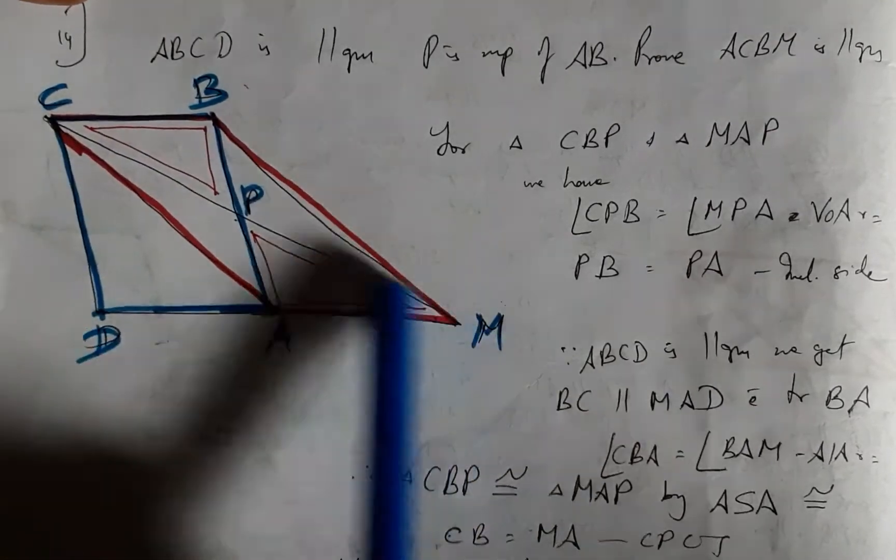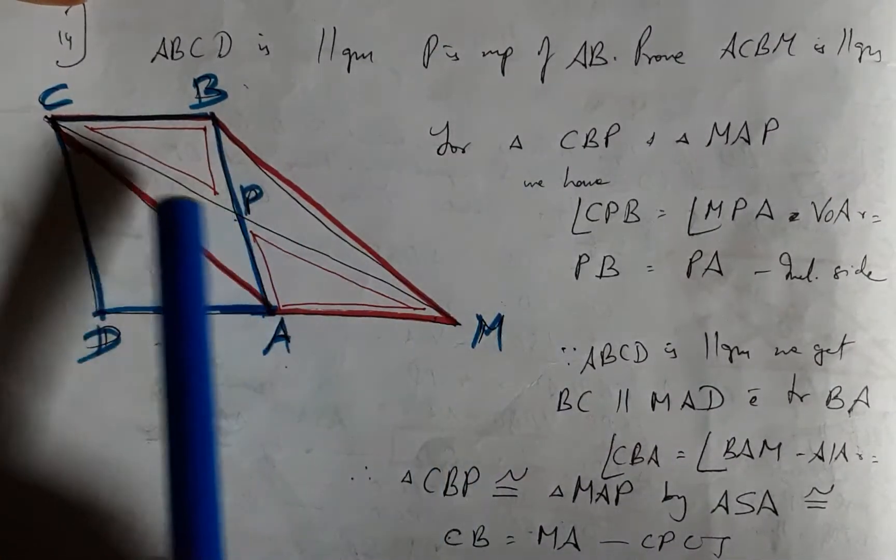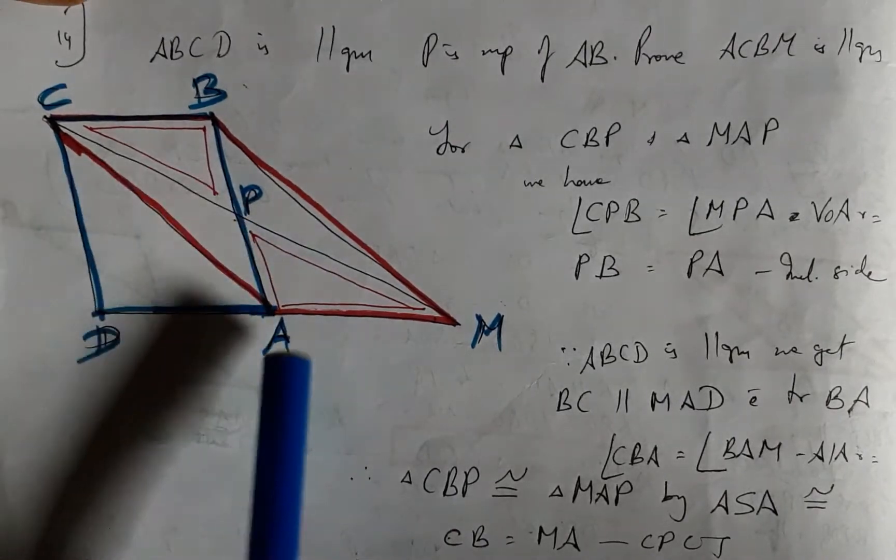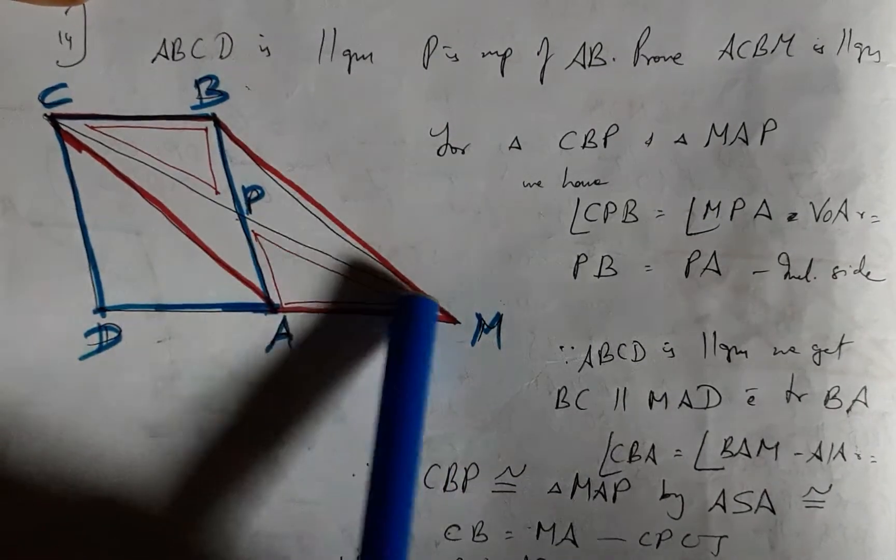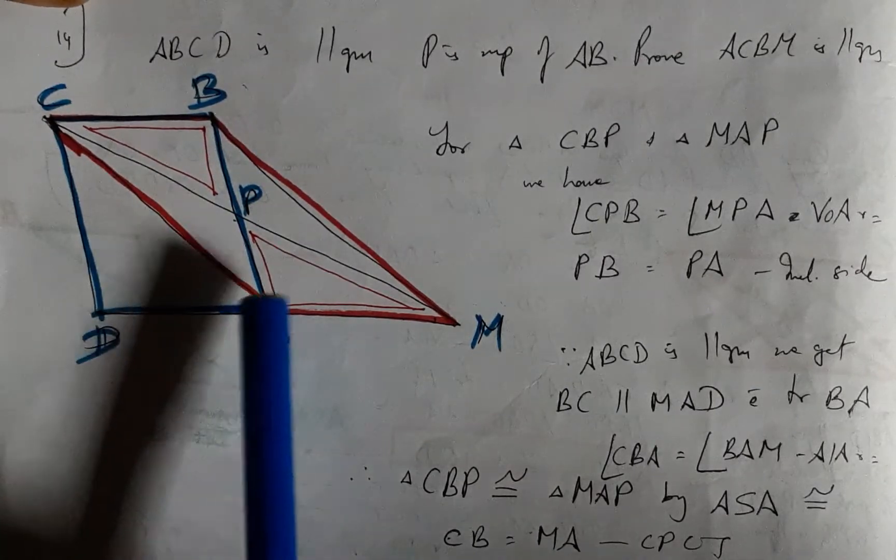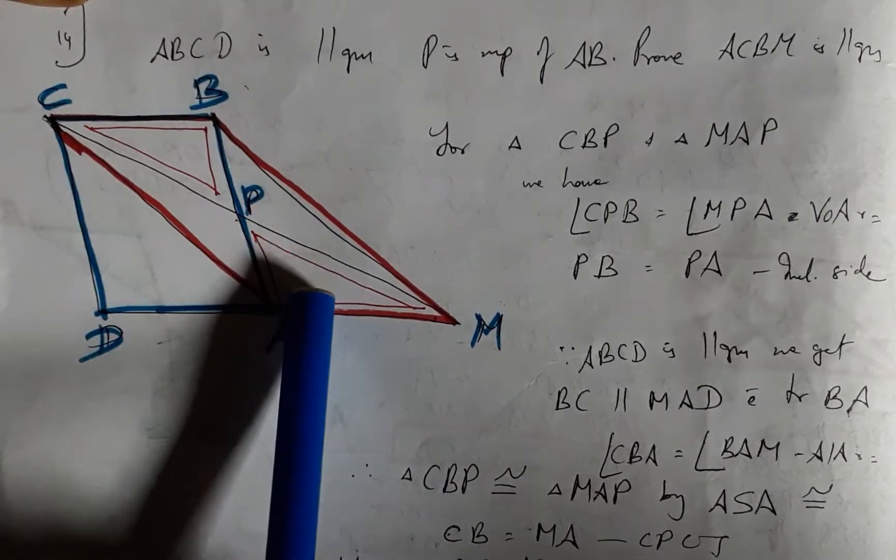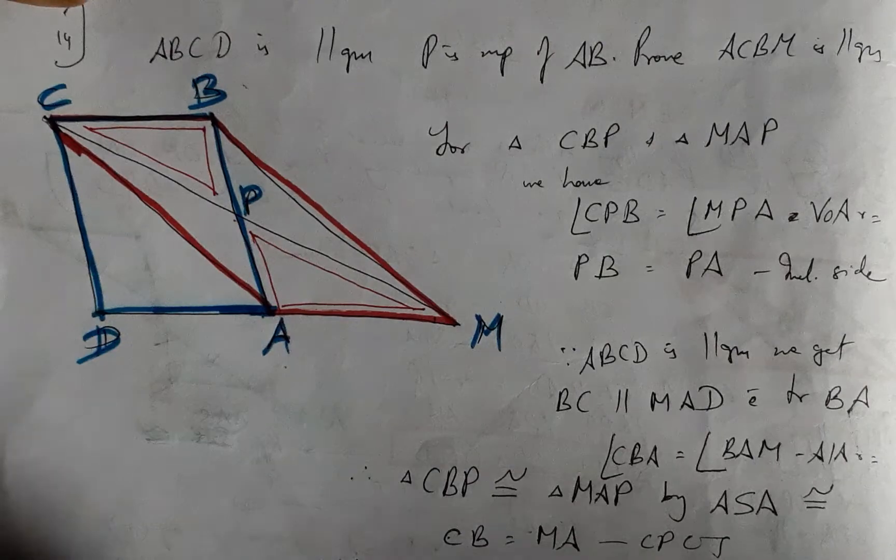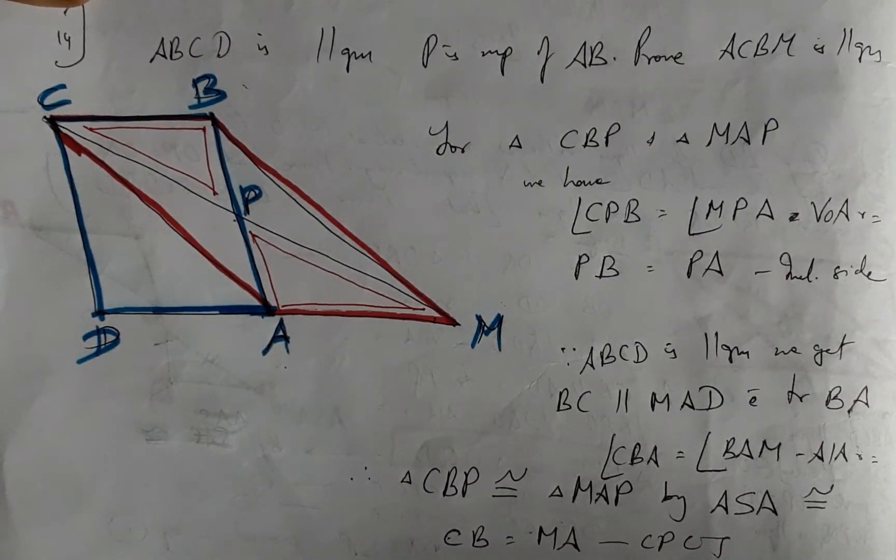For that, CM being joined, we have triangles CBP and MAP. Herein I have just identified the triangles here for convenience sake. And once this congruency is proved we can arrive at the requisite proof.